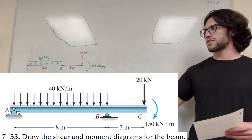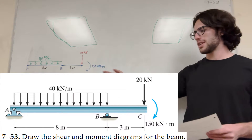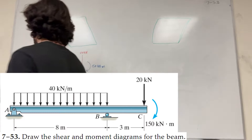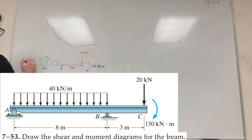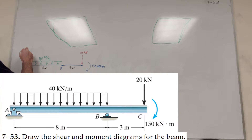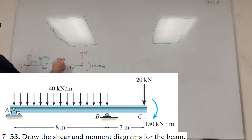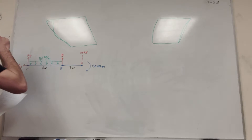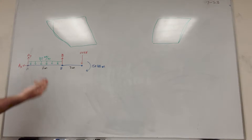So I haven't finished this free body diagram yet, let's do that right now. So A is a fixed point, so it's going to have A of Y and then A of X. And then B is a roller, so it's just B. Okay so here's the finished free body diagram.